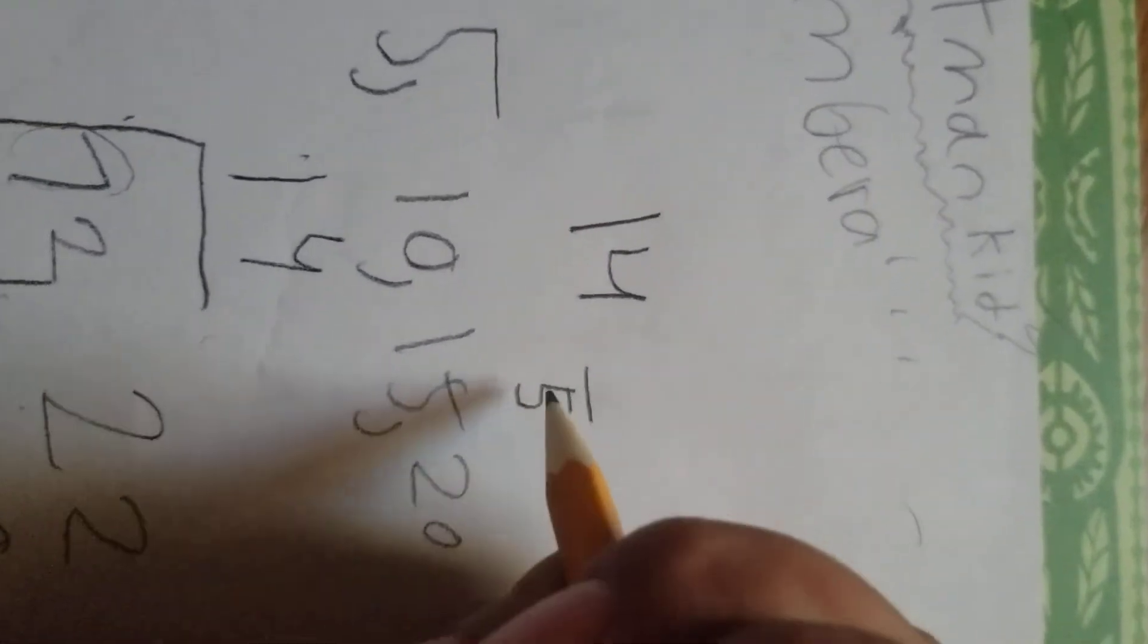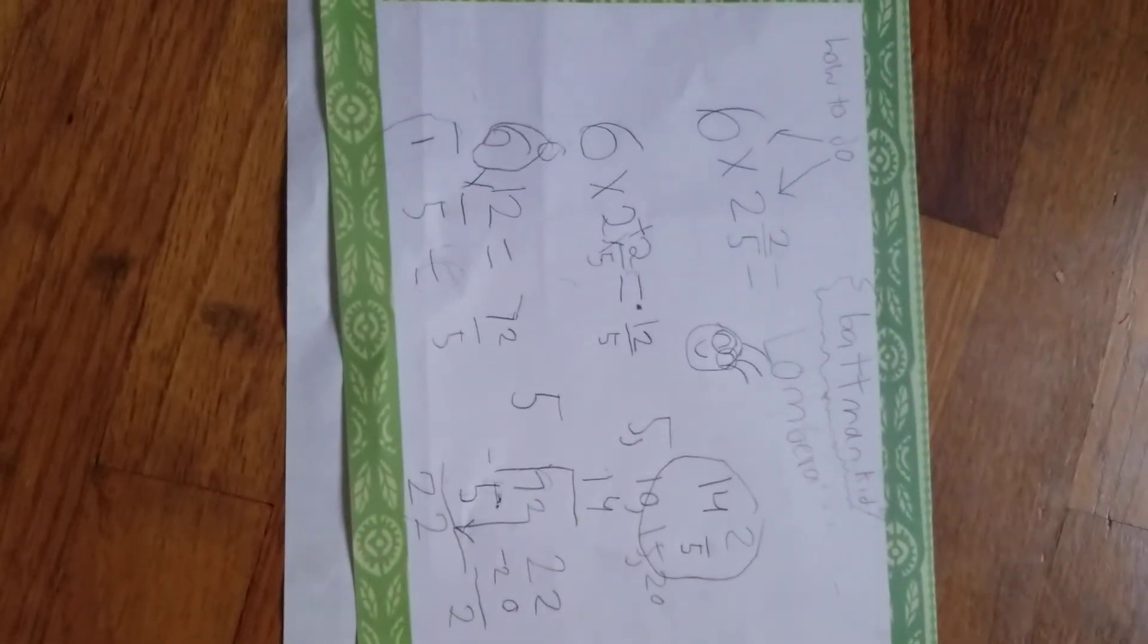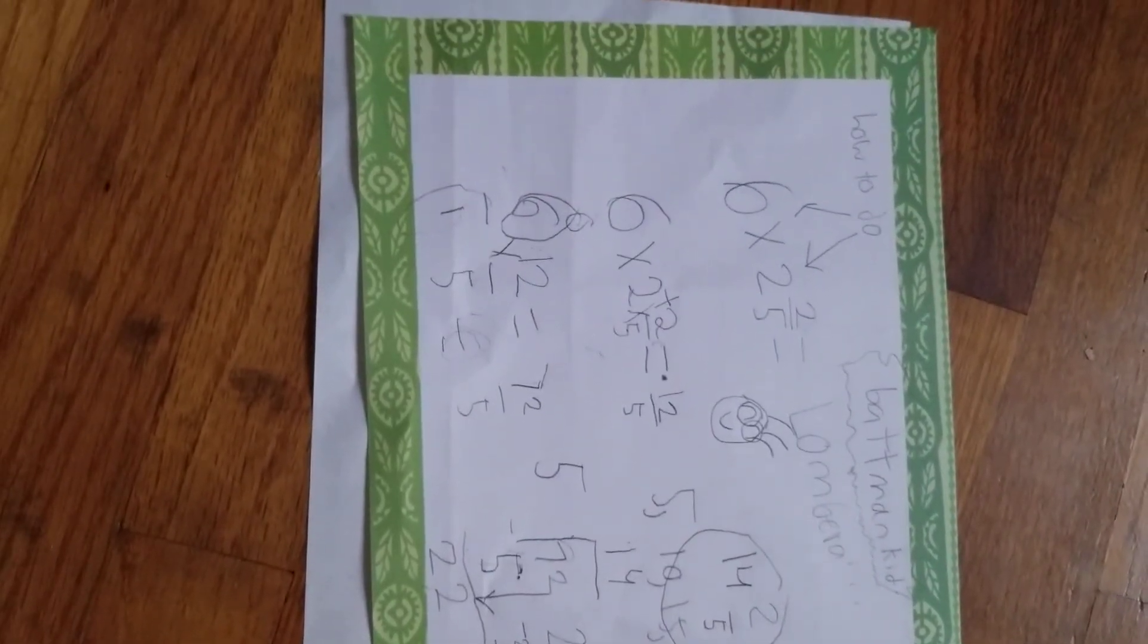So then that's gonna go up here, the answer's gonna go up here. The five's gonna be at the bottom, don't forget about that five. And then you write the two, your remainder, on top. And this is the answer: 14 and two-fifths. And that is how you do six times two and two-fifths.